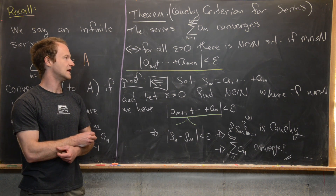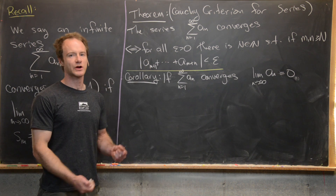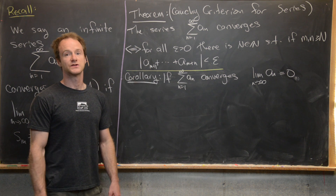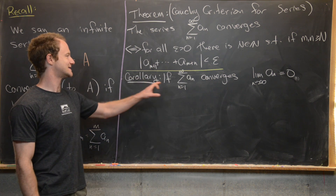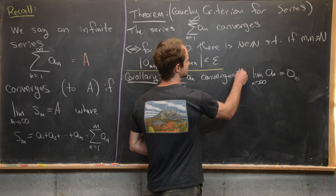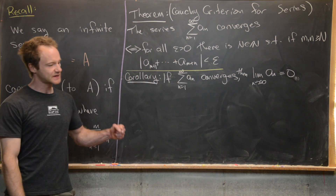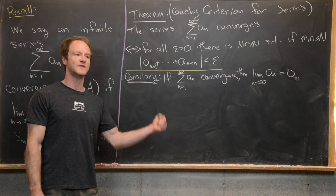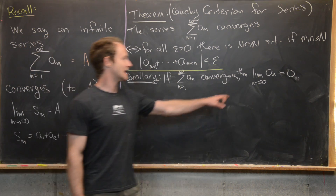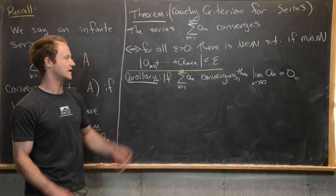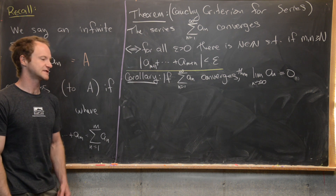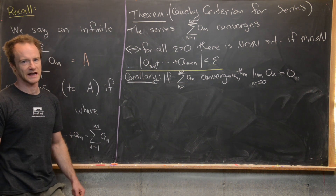Now we'll do a quick corollary to this theorem. It says that if the series a sub n converges, then the limit of the terms must equal zero. Sometimes this is presented in a Calculus 2 class via its contrapositive as the test for divergence: if the limit of the terms is not equal to zero, the series diverges. We'll do all the steps of the proof, though it's fairly simple.